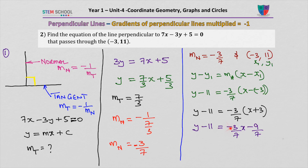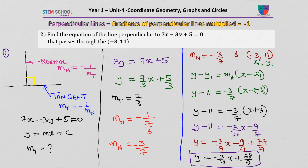Expanding the bracket: y minus 11 equals minus 3 over 7 x minus 9 over 7. Now taking the 11 to the other side, I get y equals minus 3 over 7 x minus 9 over 7 plus 11 over 1. Multiplying top and bottom by 7 gives 77 over 7, so y equals minus 3 over 7 x plus 68 over 7, because 77 minus 9 is 68.